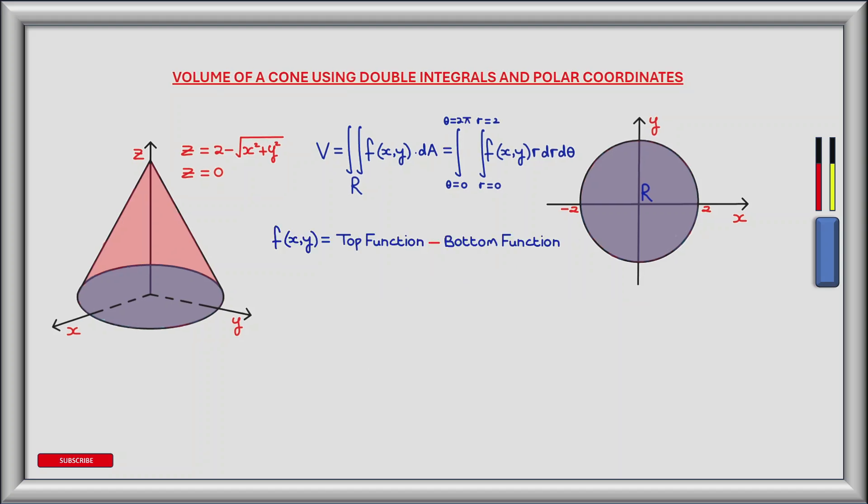Now let's deal with the height component f(x,y). We have two functions between which we are calculating volume, and we need to subtract one from the other to determine the height. To do this we need to work out which of the two functions is larger when x and y are 0 — so which is the top function and which is the bottom function.